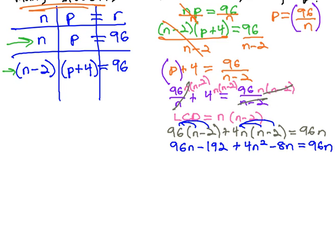One thing you might notice is we've got this 96n on both sides. If we subtract 96n from both sides, those will each subtract out to 0. That's really convenient.